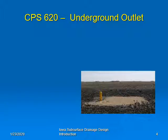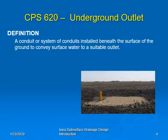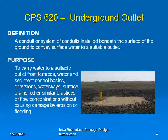The underground outlet is a related practice. An underground outlet contains many of the same components that a subsurface drainage system does, although its purpose is somewhat different. It is defined as a conduit or system of conduits installed beneath the surface of the ground to convey surface water to a suitable outlet. The purpose is to carry water from terraces, water and sediment control basins, diversions, waterways, surface drains, and other similar practices without causing damage by erosion or flooding.